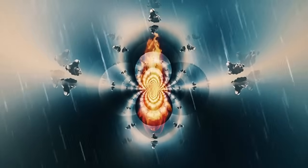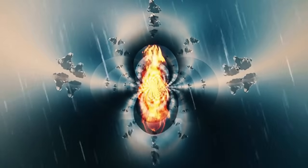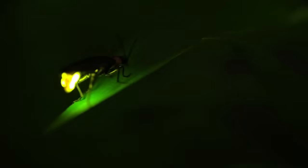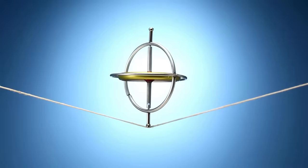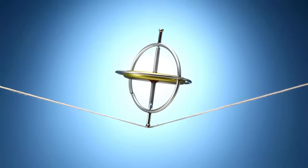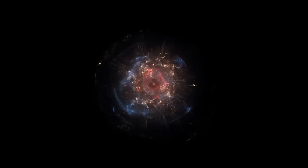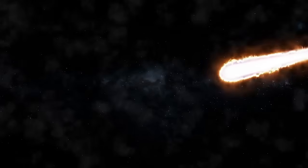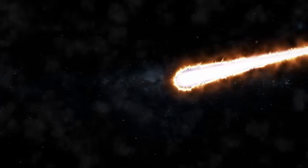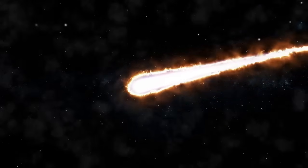As red supergiants approach the end of their lives, these fusion processes become increasingly unstable, with the star struggling to fuse heavier and heavier elements. Eventually, it reaches a point where it can no longer generate enough energy to resist the force of gravity, setting the stage for its ultimate collapse and potentially a supernova explosion. This latest brightening event offers a rare opportunity to gain a deeper understanding of these final, tumultuous stages of a massive star's life.